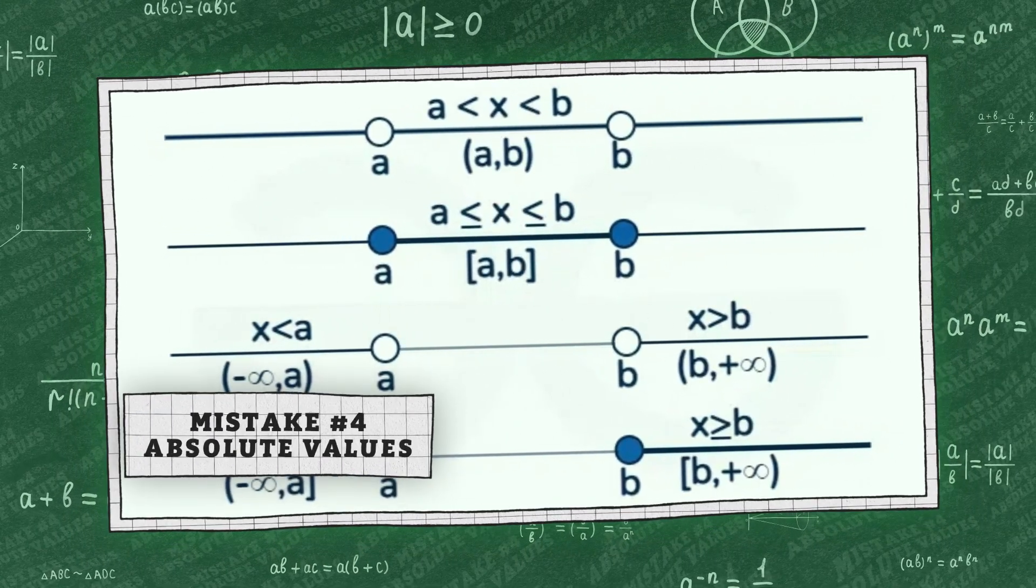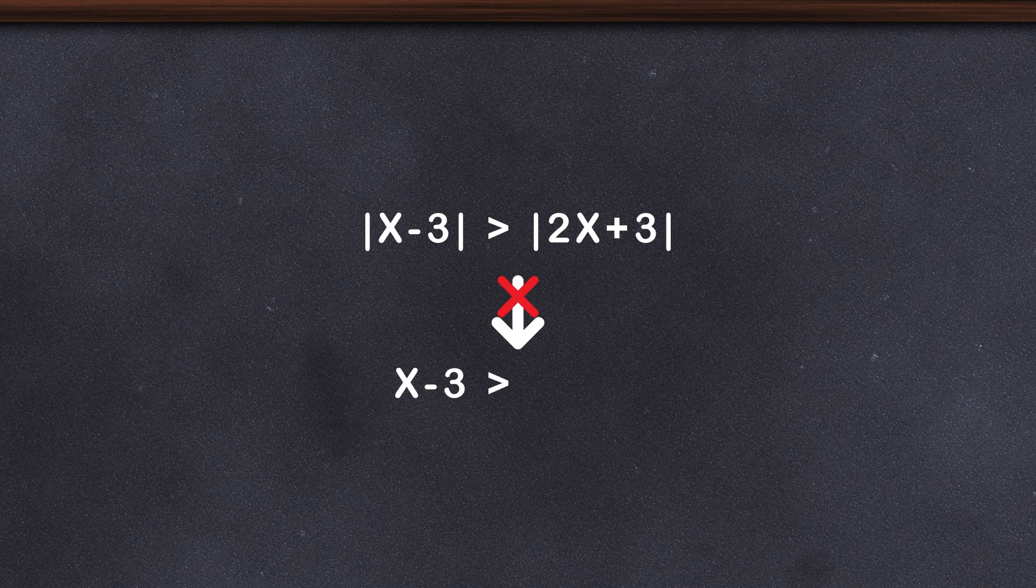Mistake number 4: Absolute values. Absolute values can be tricky to deal with if you don't know how they work. In |x - 3| > |2x + 3|, you cannot cancel the modulus from both sides. You'll have to take a structured approach to get to the actual answer.